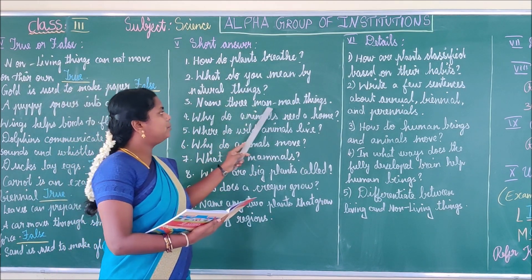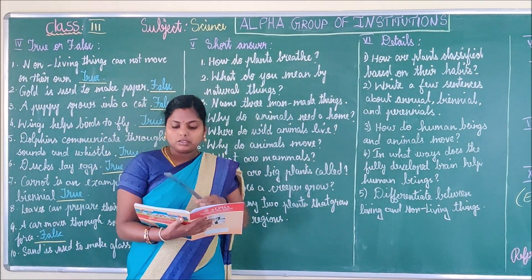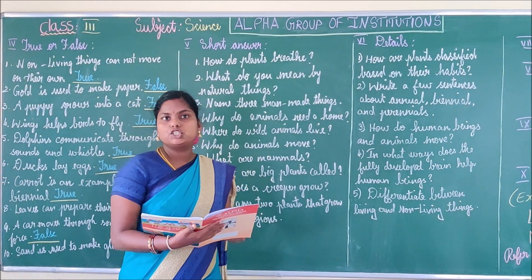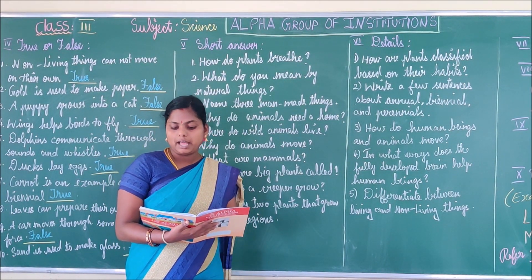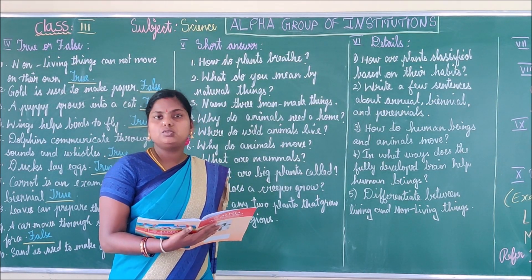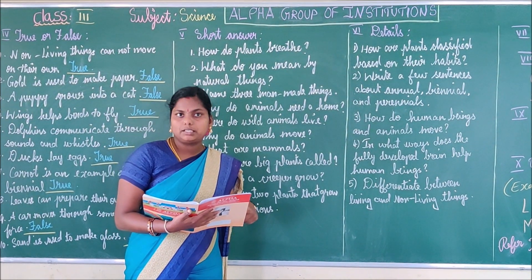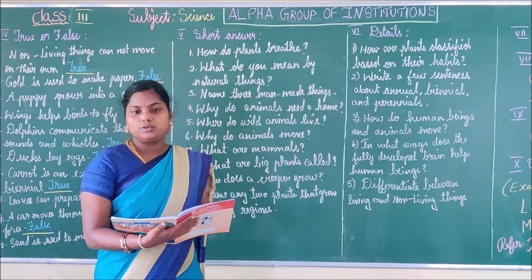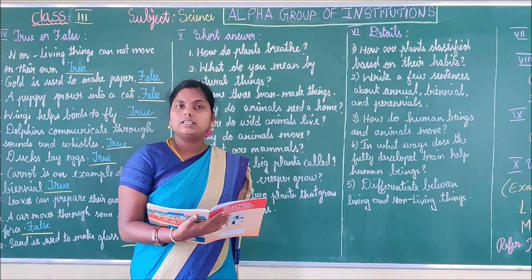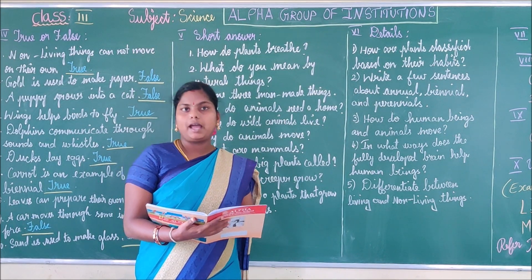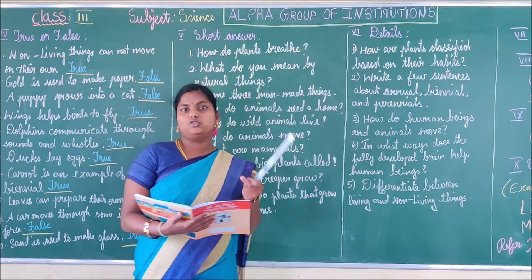Third question: Name three man-made things. Jewels using gold, glass using sand, and jam and juice using fruits.